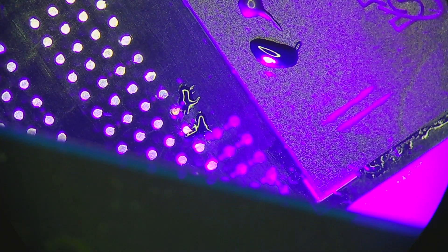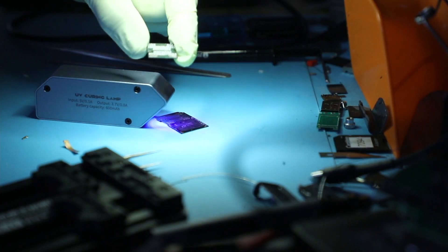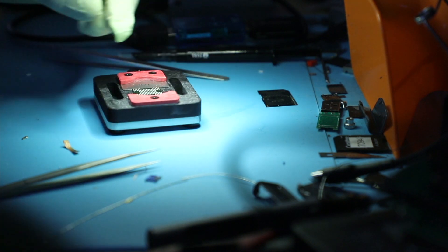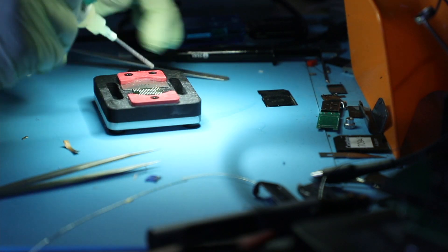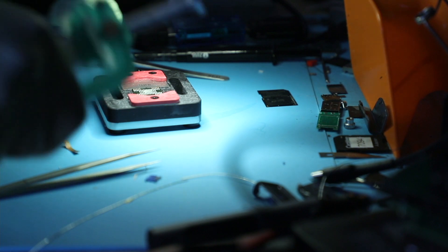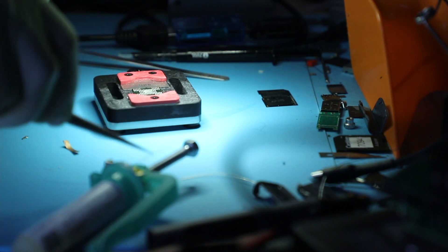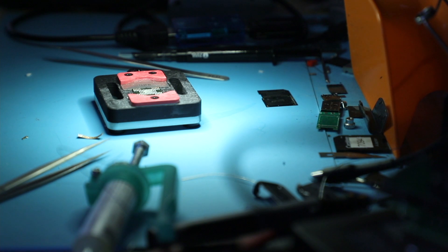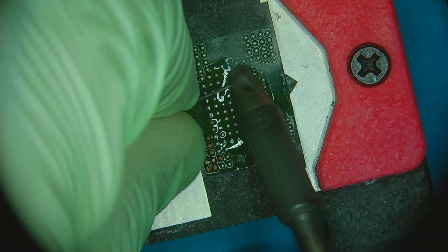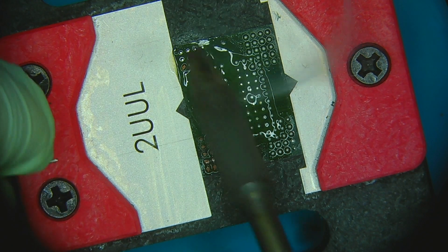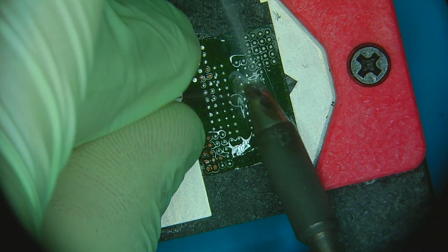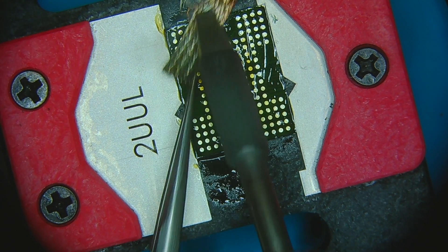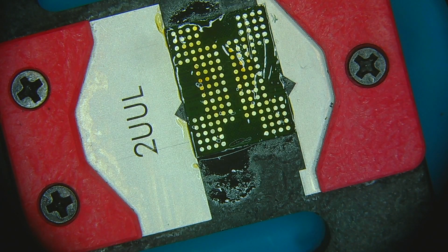Same thing, we apply the light. Now the memory chip, when it came off, it took out a bunch of pads. Lock that in there, and the same way, we just apply some flux, grab some fresh solder, turn on the fume extraction.